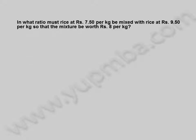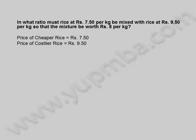In what ratio must rice at ₹7.50 per kilogram be mixed with rice at ₹9.50 per kilogram so that the mixture be worth ₹8 per kilogram? Price of cheaper rice is equal to ₹7.50 per kilogram. Price of costier rice is equal to ₹9.50 per kilogram. The mean price of rice required is equal to ₹8 per kilogram.